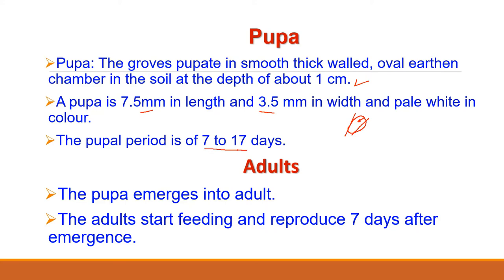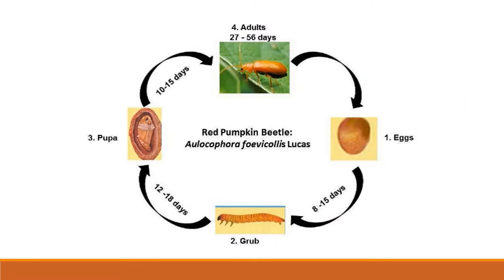After the pupal period, young beetles emerge out. The adults start feeding and begin egg-laying after 7 days of emergence. Adults live for over a month and the full life cycle may take from about 4 to 8 weeks. In the slide, you can see the complete life cycle of Aulacophora foveicollis: the adult female, after mating, lays eggs in soil around the host plant.